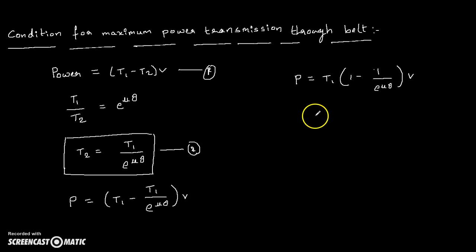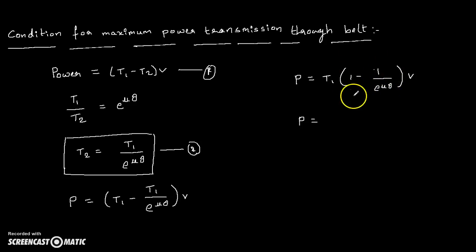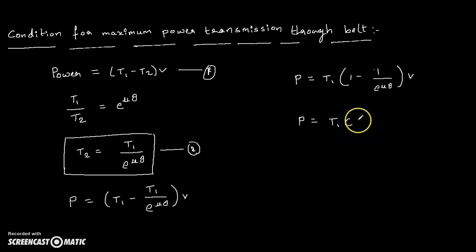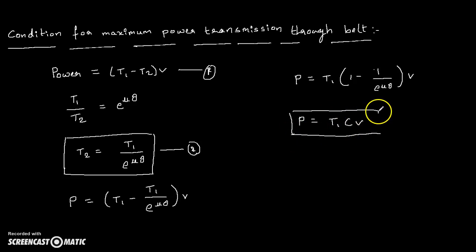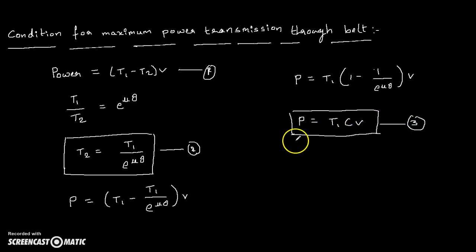In this equation, the term (1 minus 1/e^(μθ)) can be considered as a constant value C. So Power = T1 × C × velocity. This gives us a relation in terms of a constant, the tension in the tight side, and velocity. Assume this as Equation 3.